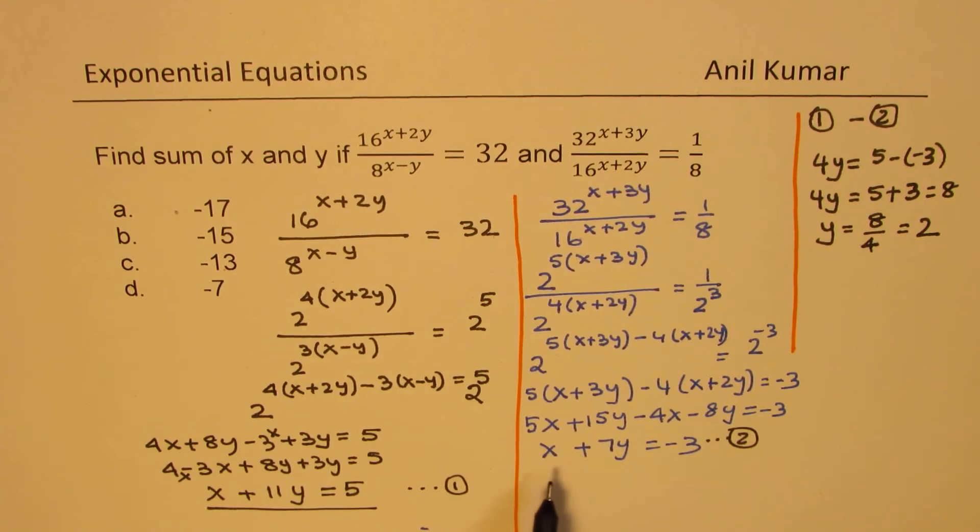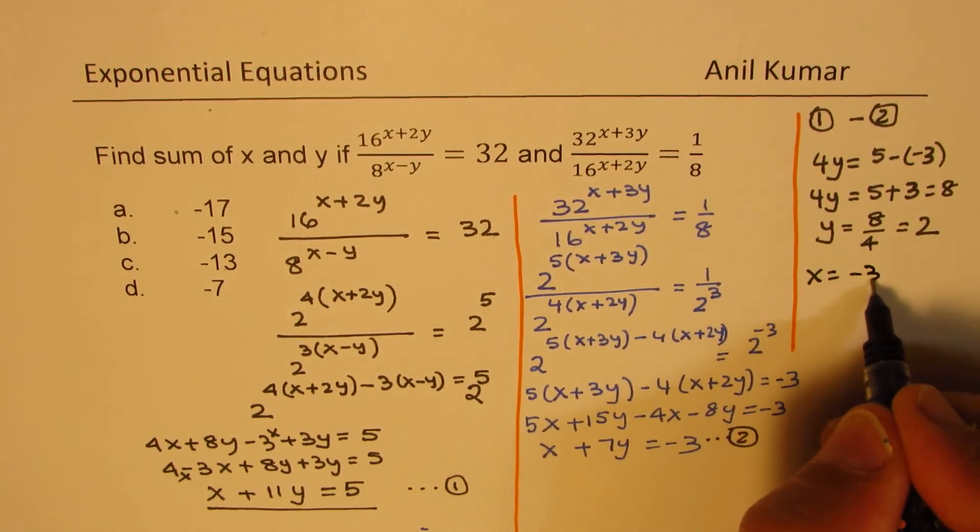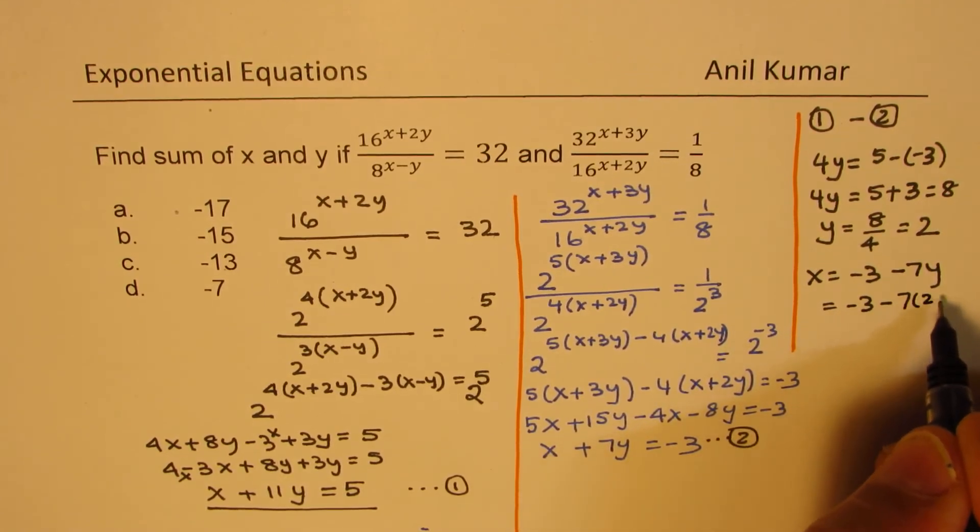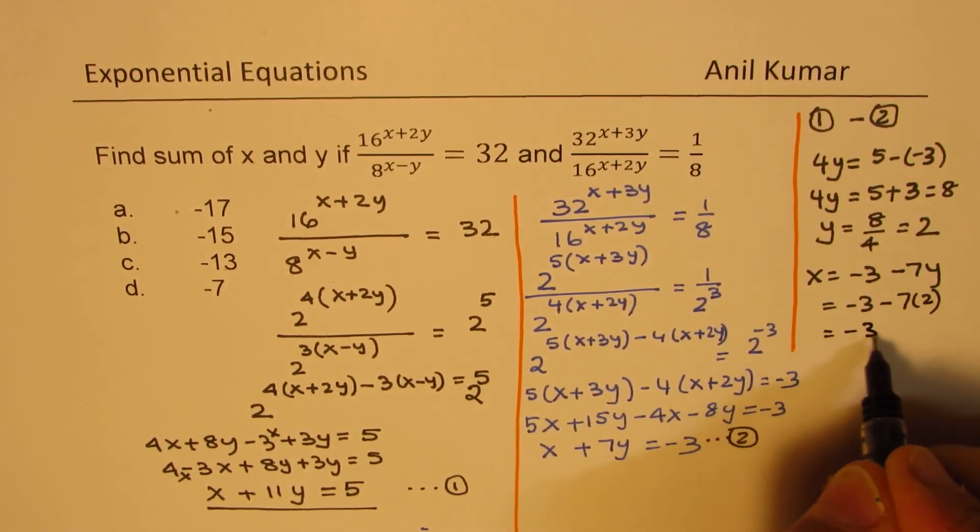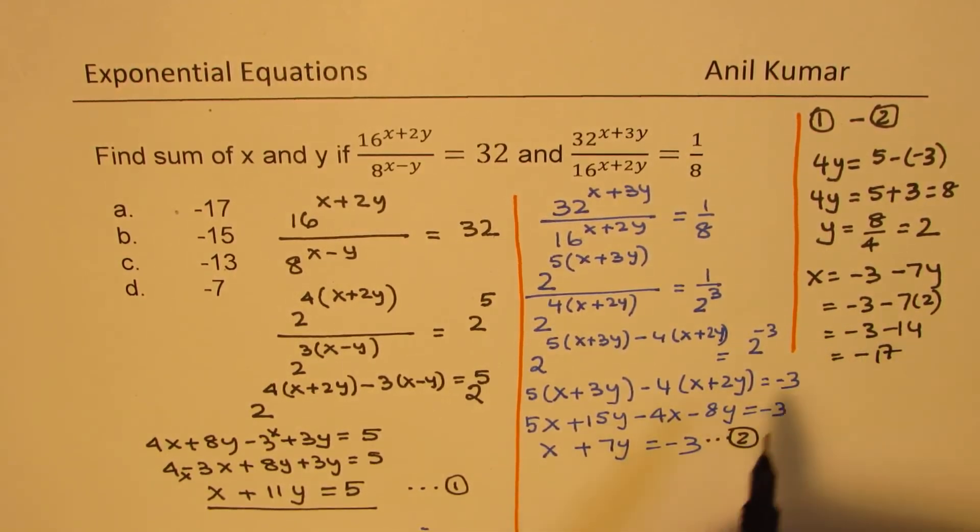So we can now substitute 2 for y and then calculate what x is. Let's use equation number 2. So x will be equal to minus 3 minus 7y, which is minus 3 minus 7 times 2, which is minus 3 minus 14. And that gives you minus 17.